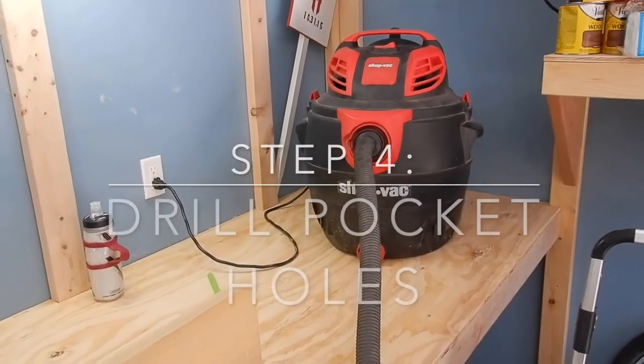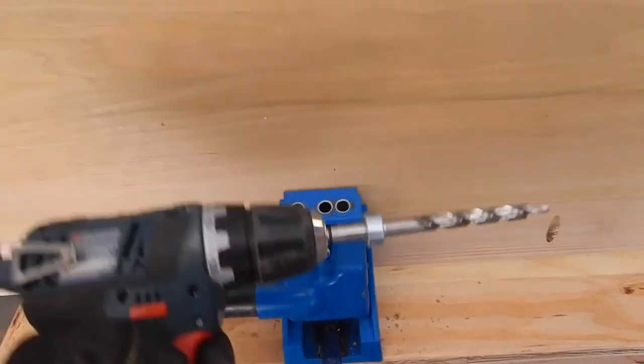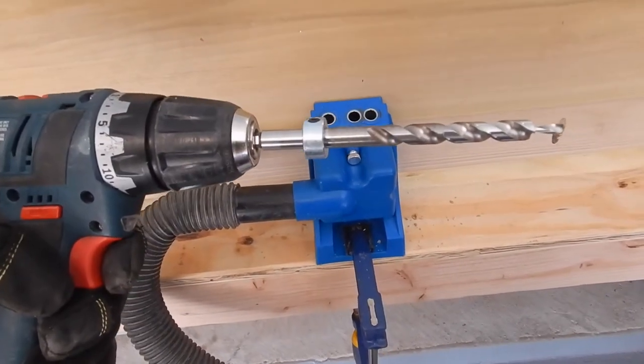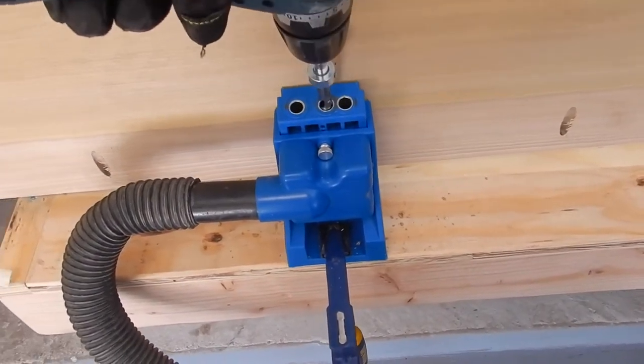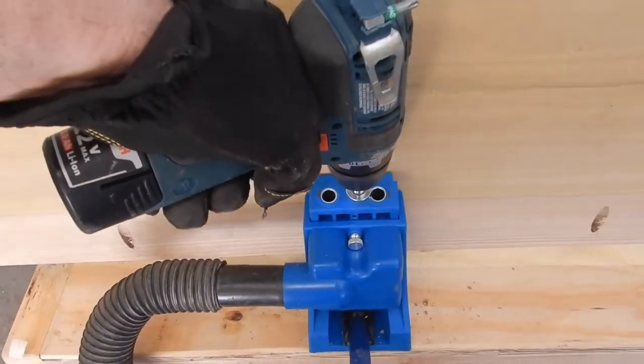Next step is to drill the pocket holes. I use the Kreg K4 to do all my pocket holes and a vacuum hose attached to the side. So just run the pieces of wood through the jig one hole at a time and drill it in the center and move on down the line. It's quite simple and very efficient.